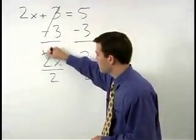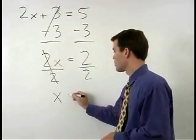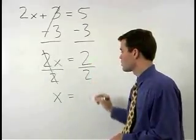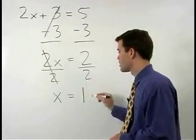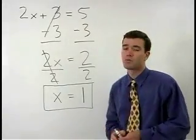On the left, the 2's cancel, and we're left with x. On the right, 2 over 2 simplifies to 1. So our answer is x equals 1.